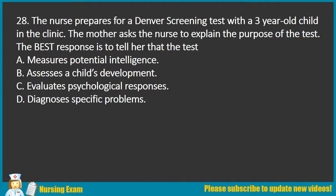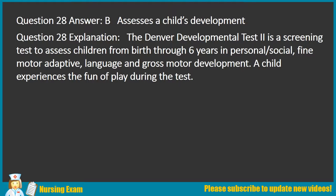Question 28. The nurse prepares for a Denver screening test with a 3-year-old child in the clinic. The mother asks the nurse to explain the purpose of the test. The best response is to tell her that the test: A. Measures Potential Intelligence. B. Assesses a Child's Development. C. Evaluates Psychological Responses. D. Diagnoses Specific Problems. Answer: B. Assesses a Child's Development.